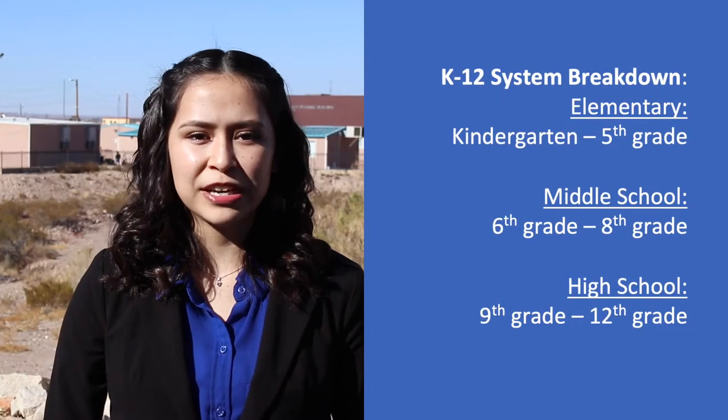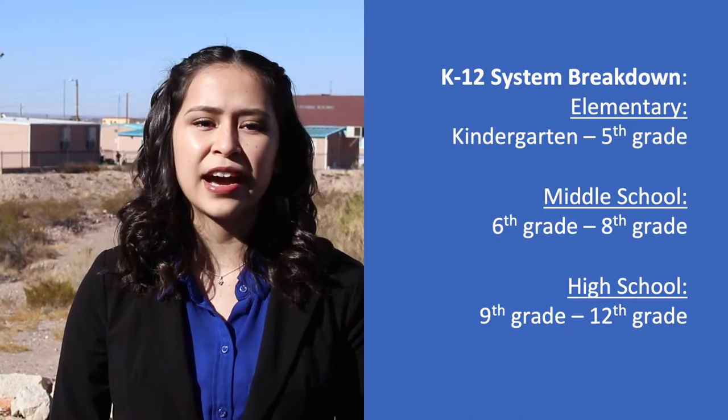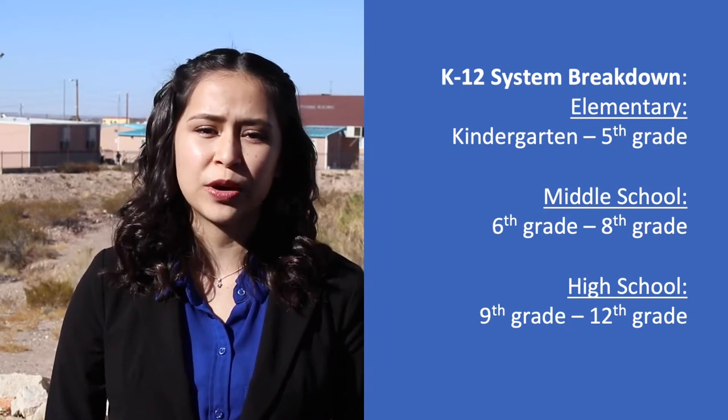Before we are able to talk about our program, we need to give some background information on what the early college system is. The typical United States education system is split into two separate parts: the K-12 system and the college system. The K-12 system hosts children from ages 5 to 18, split into three levels: elementary school, typically kindergarten through fifth grade; middle school, typically sixth through eighth grade; and high school, typically ninth through twelfth grade. There is a focus on in-classroom learning and a general education is taught. Each student is required to take four core subjects each year.